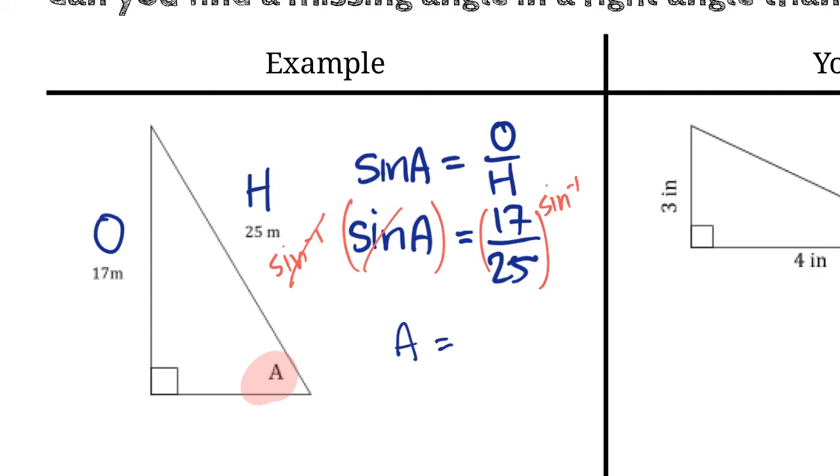Well, all we have to put into our calculator is sine inverse. So shift sine or second function sine. And then 17 over 25. In my calculator, if I do this, it tells me the answer is 42.84 degrees. That's what A is.